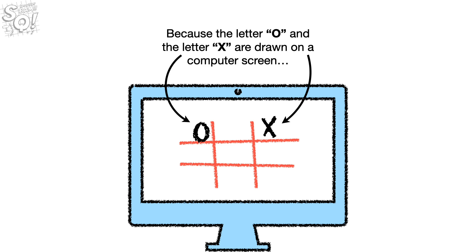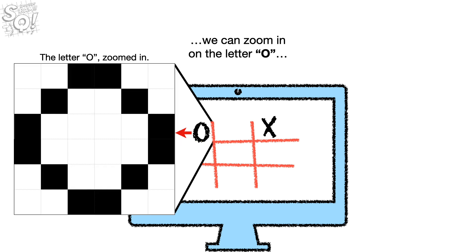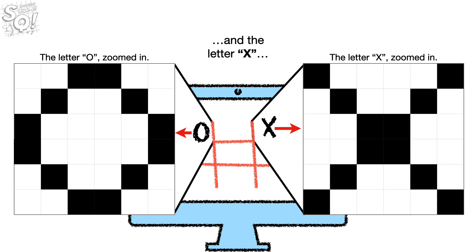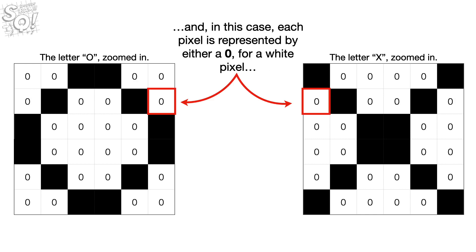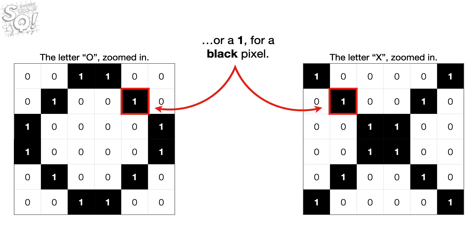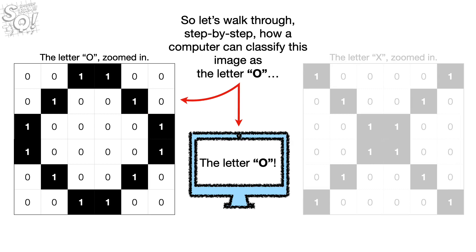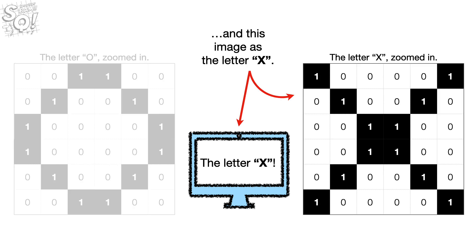Because the letter O and the letter X are drawn on a computer screen, we can zoom in and see that each image is just a bunch of pixels. In this case, each pixel is represented by either a 0 for a white pixel or a 1 for a black pixel. So let's walk through, step by step, how a computer can classify this image as the letter O and this image as the letter X.